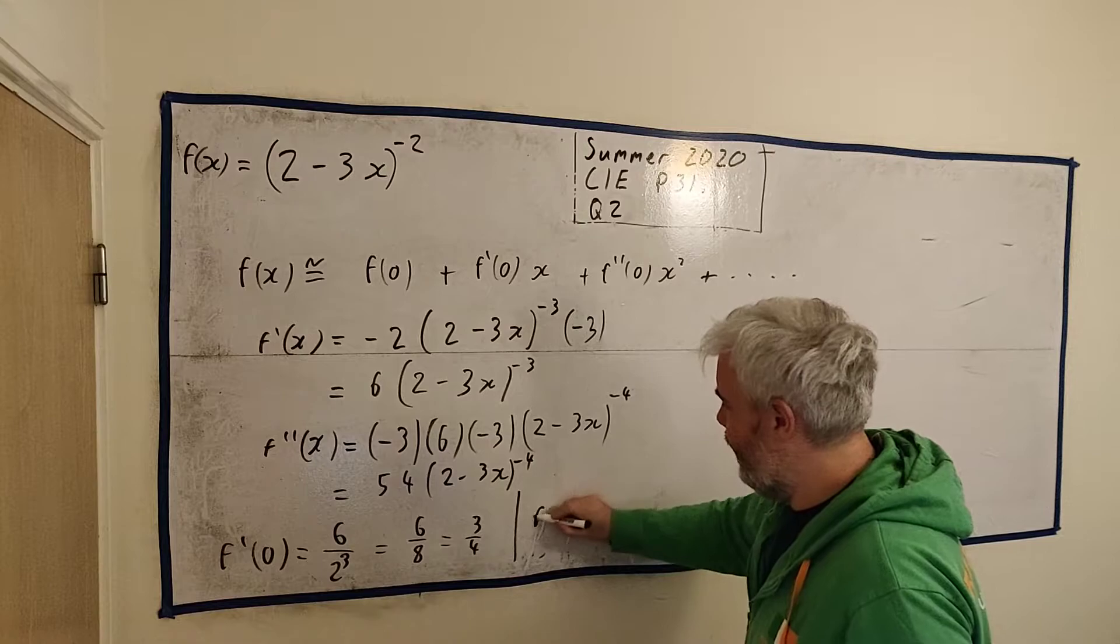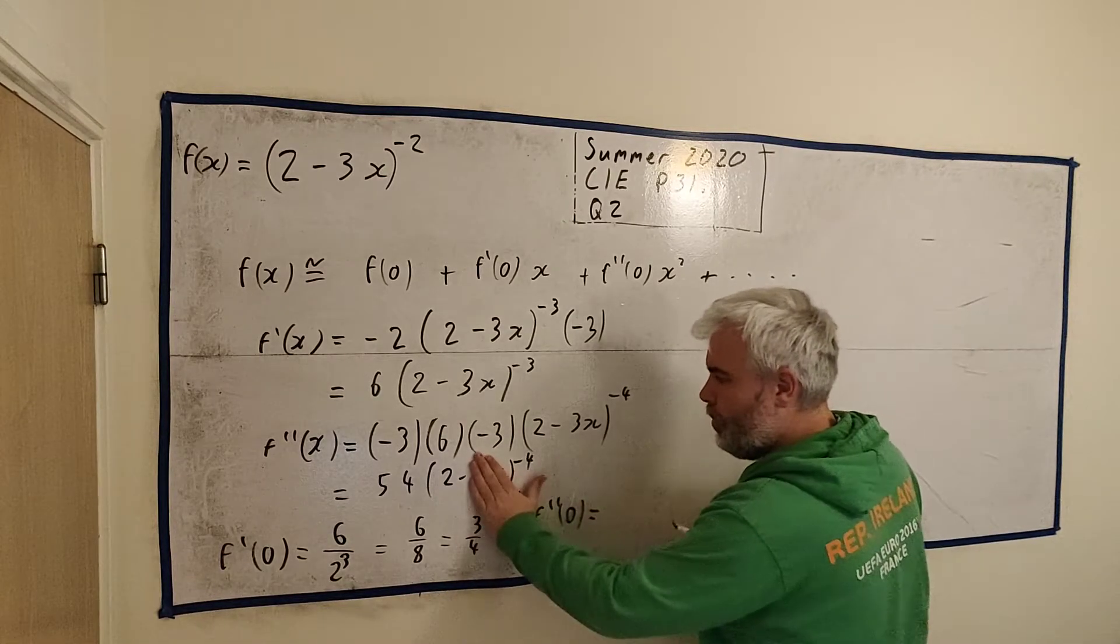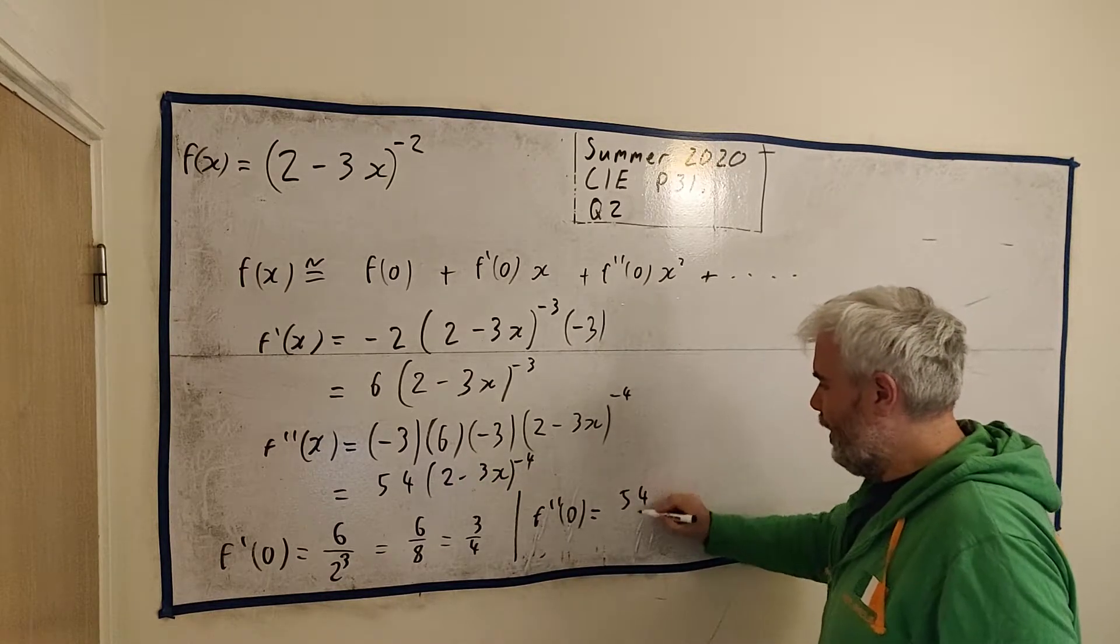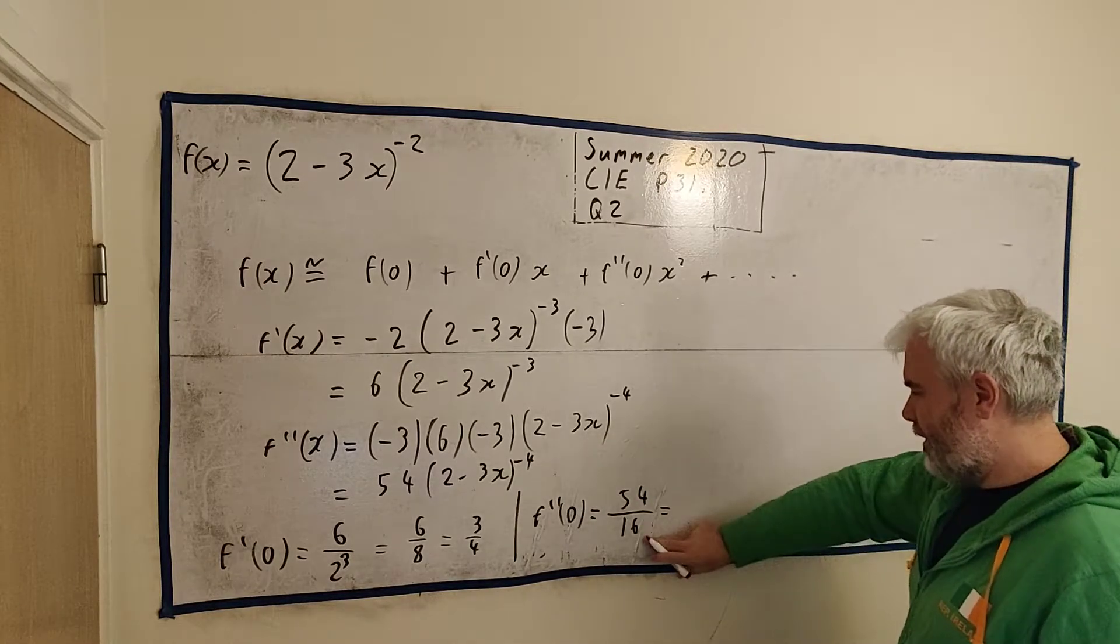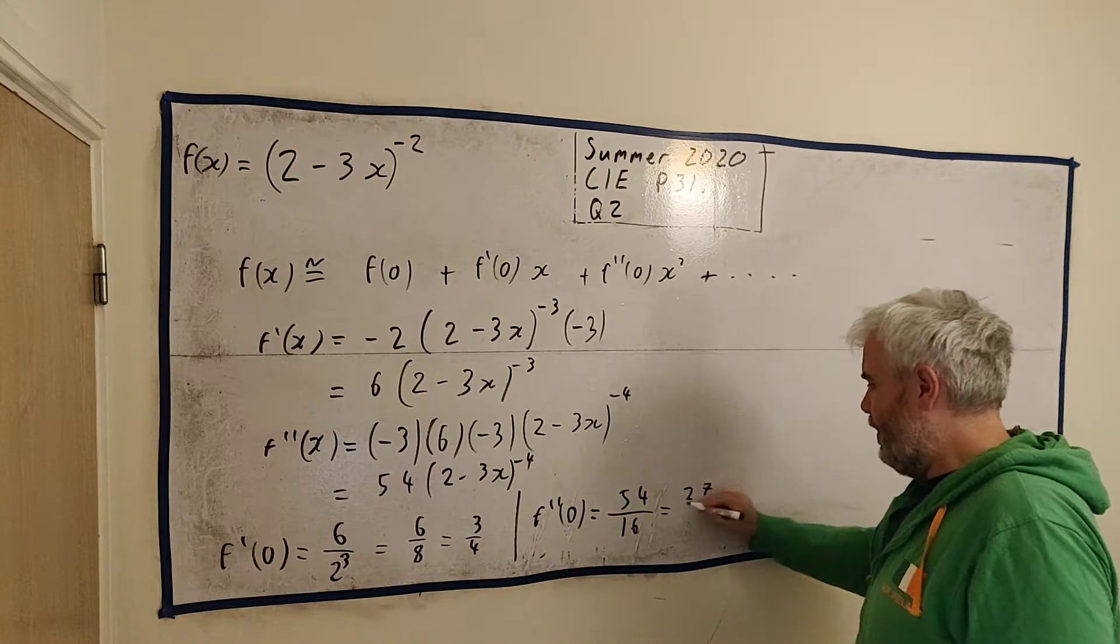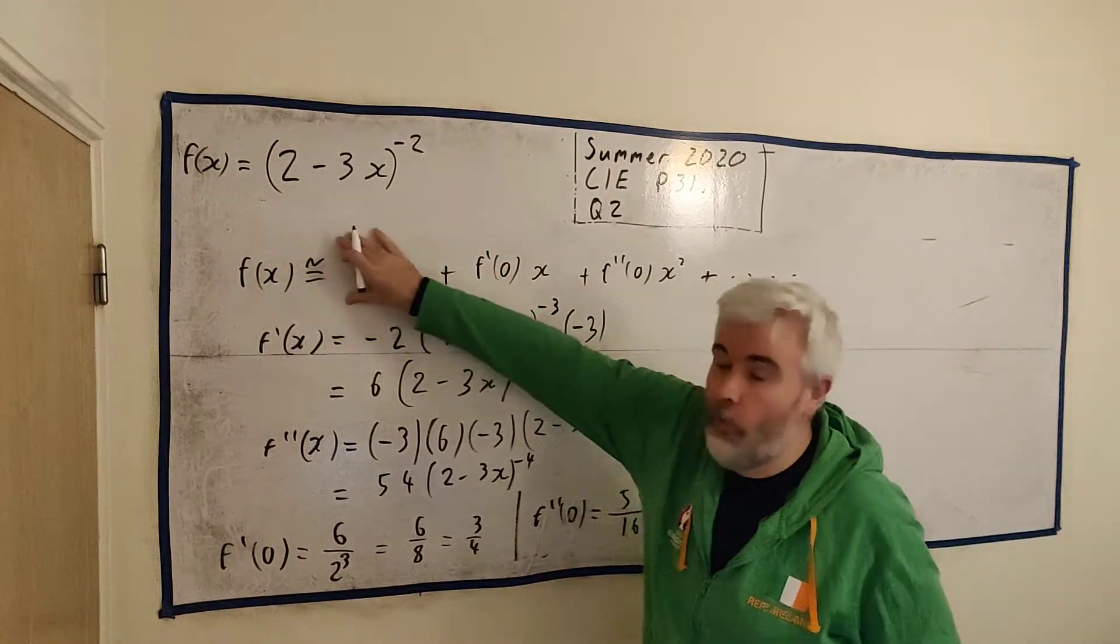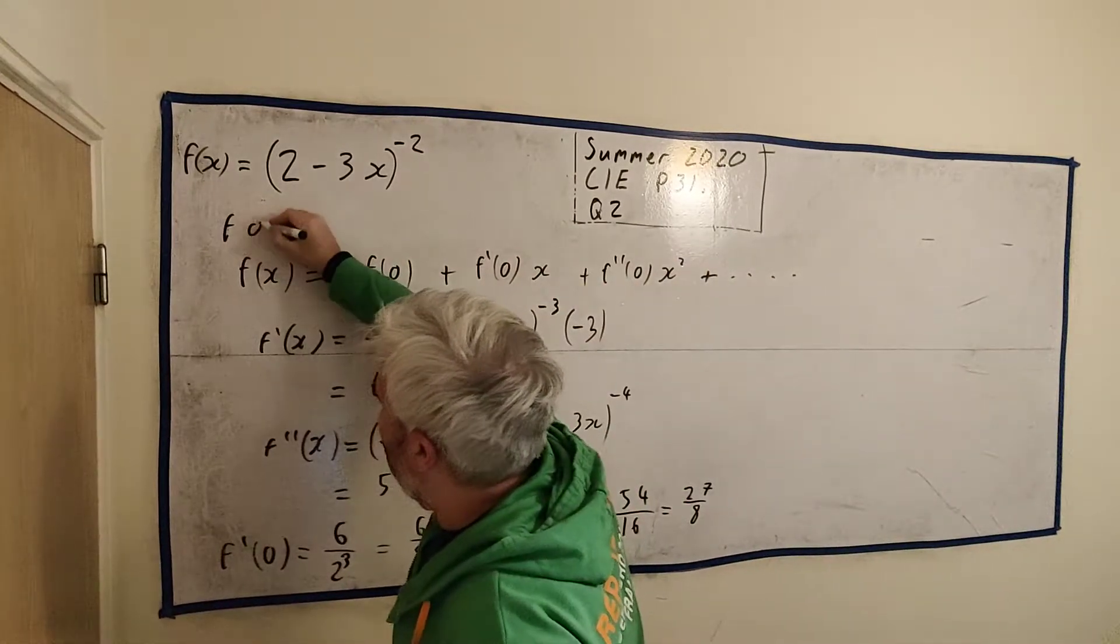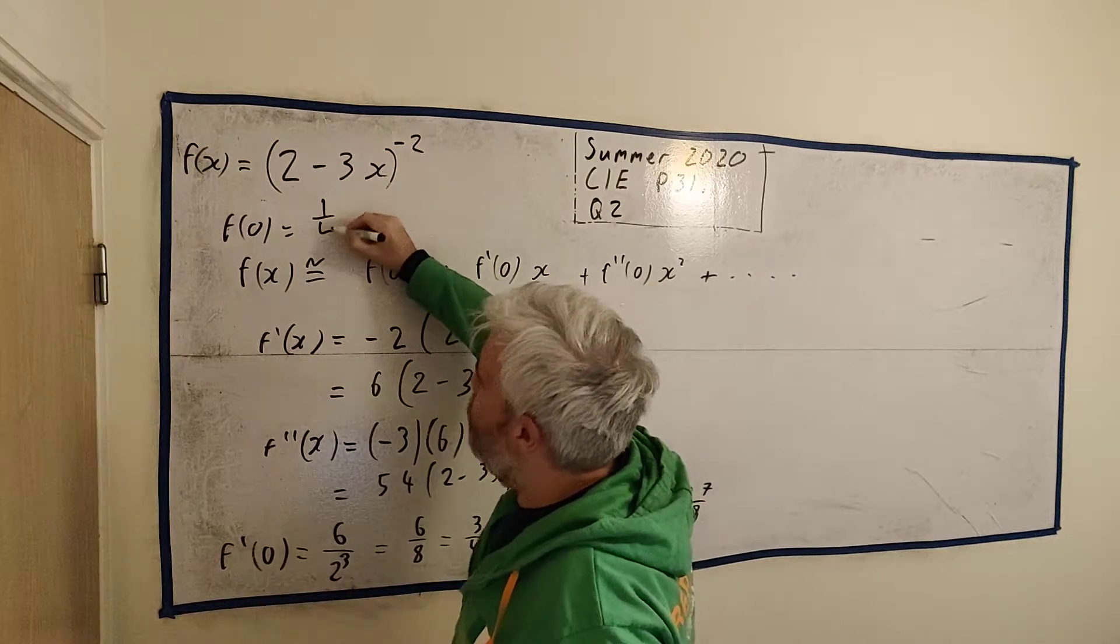And again, we'll squeeze this one in down here. I'll do this one a little quicker. The second derivative at 0 becomes 54 times 2 to the power of minus 4. That's 1 over 16. And we can clean that up, I guess. 2 goes into both. 27 over 8. So the question then, we can write all of this out. Sorry, I never wrote in f(0). f(0) is 2 to the power of minus 2, which is 1 over 4.